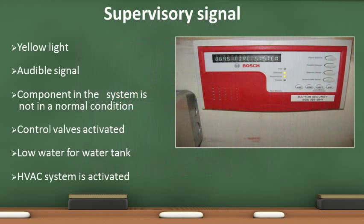A supervisory signal will also show up as a yellow light and indicate a more severe problem. One of the most common problems is a fire sprinkler shutoff valve that has been closed. The monitoring company may notify the fire department to investigate. A fire sprinkler valve in the closed position means the building or specific area is not protected. In this case, a fire watch may be required.